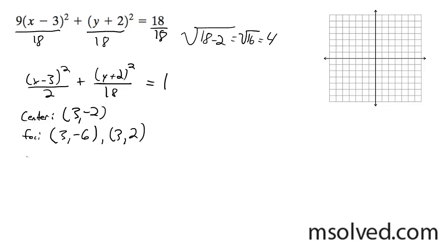Alright, so my major axis in this case is going to be 3, negative 2. And then it's going to be square root of 18, which is 3 root 2. And then I'm going to get 3, negative 2, plus 3 root 2. And then my minor axis is just the square root of 2.